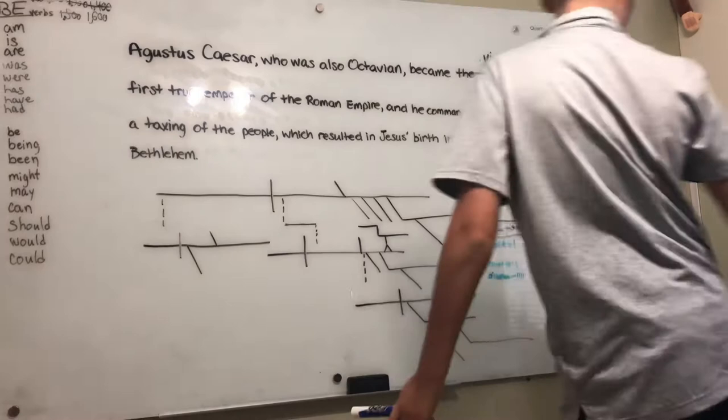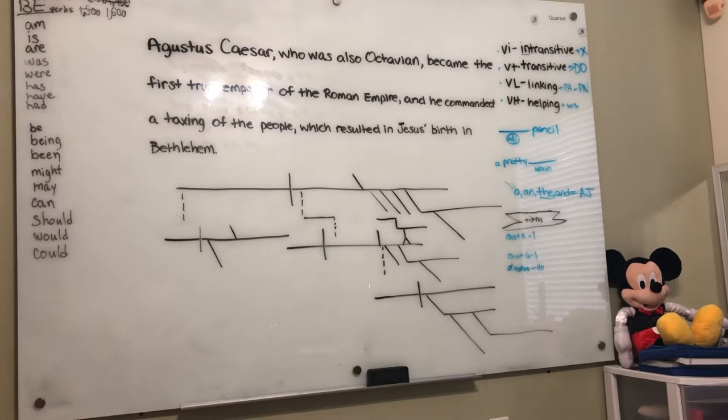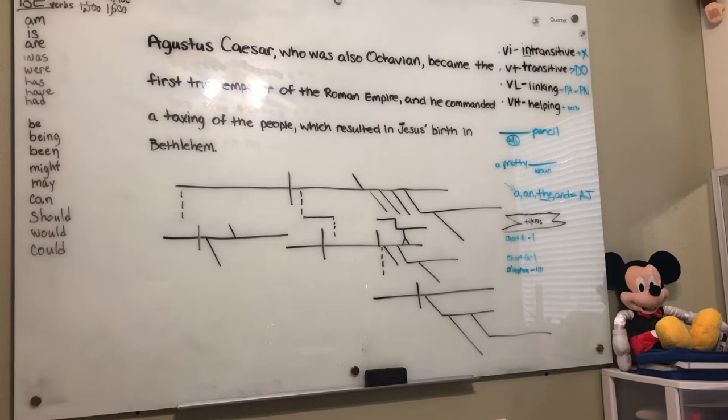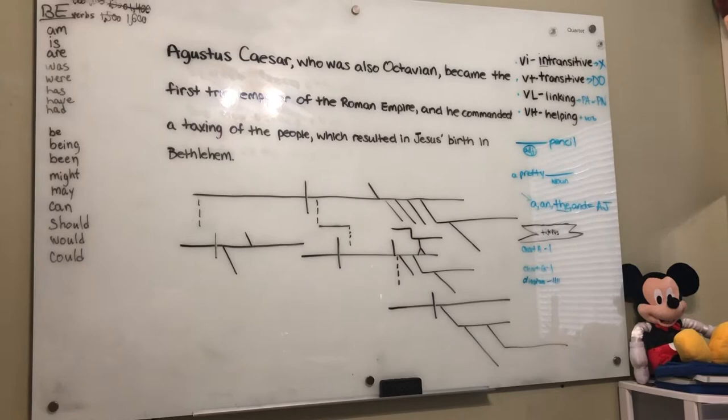Augustus Caesar, who was also Octavian, became the first true emperor of the Roman Empire, and he commanded a taxing of the people, which resulted in Jesus' birth in Bethlehem. Alright, quickly go and label it and diagram it.